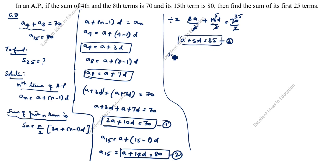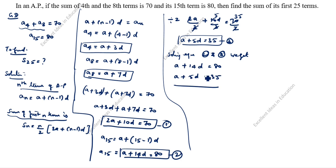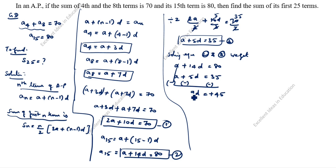Now solving equations 2 and 3: the second equation is A plus 14D equals 80, and the third is A plus 5D equals 35. We subtract the third from the second, changing the signs of the lower equation. A minus A cancels, and 14D minus 5D gives 9D equals 45, so D equals 45 divided by 9, which gives D equals 5.